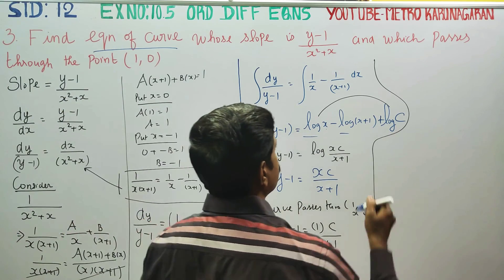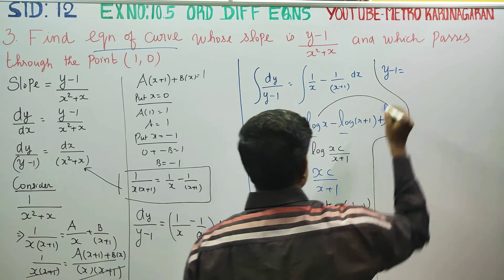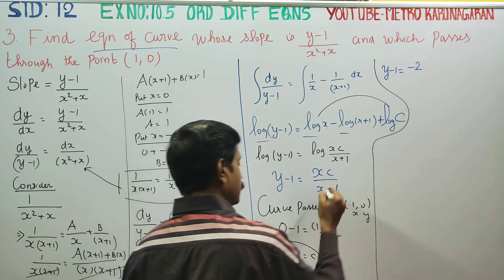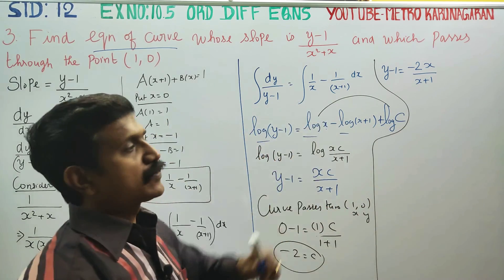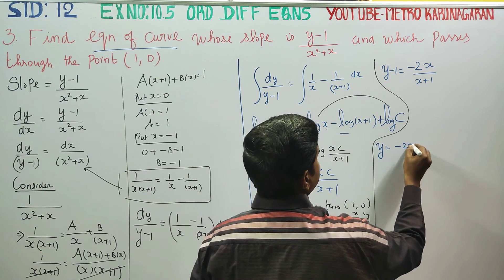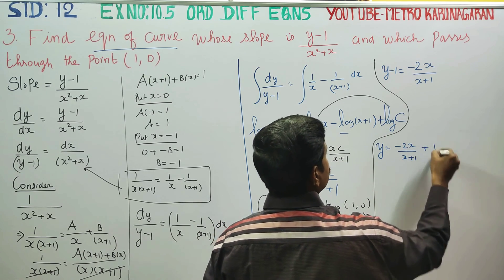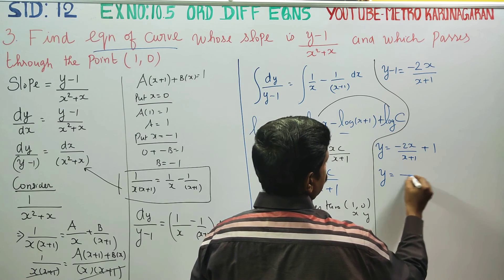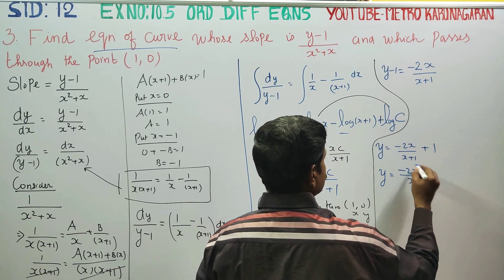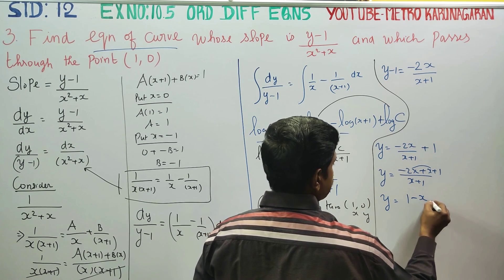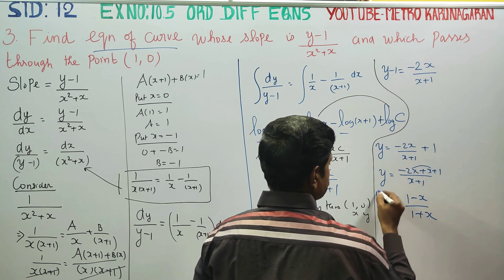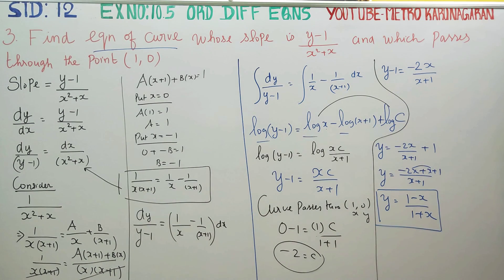Substituting C = -2: y minus 1 equals -2x/(x+1). Cross multiplying: (y-1)(x+1) = -2x, giving yx + y - x - 1 = -2x, so y(x+1) = 1 - x. Therefore y = (1-x)/(1+x). This is the required equation of the curve.